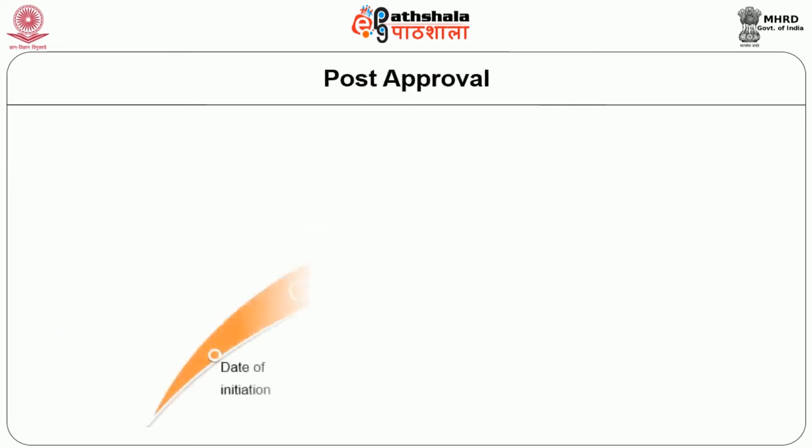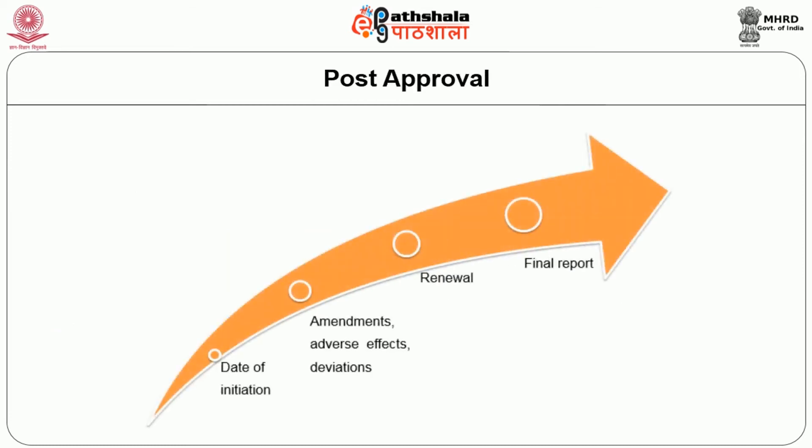What happens after approval? The project is approved by the ethics committee and you have to inform the date of initiation, and keep on monitoring to see whether there are amendments, adverse effects, or any changes. If any changes are made, you have to ask for re-consent from the ethics committee. And finally, after the study is over, you have to submit a final report. These are the responsibilities of the investigator as far as the ethics committee is concerned.